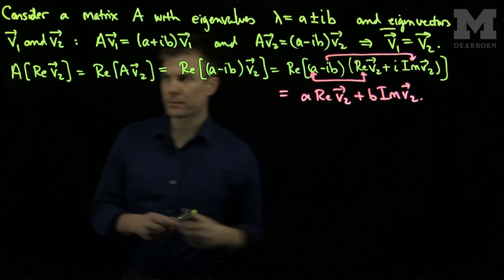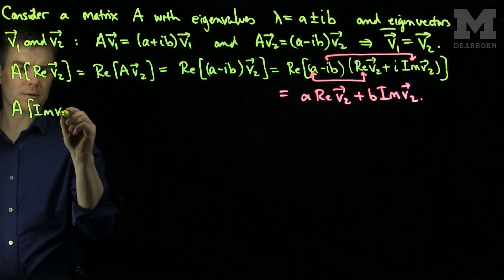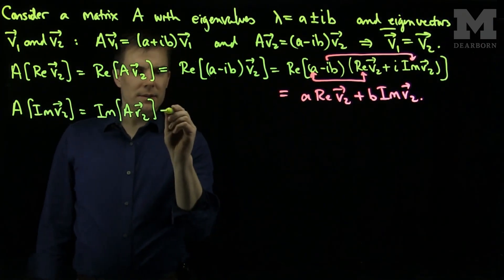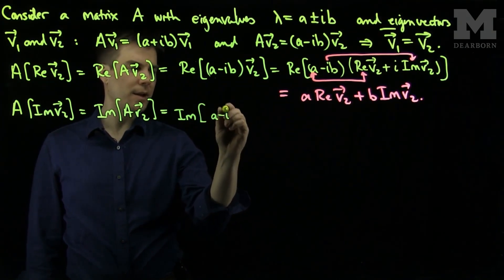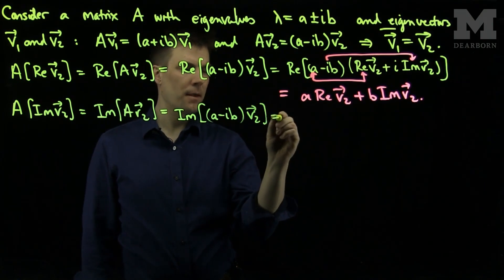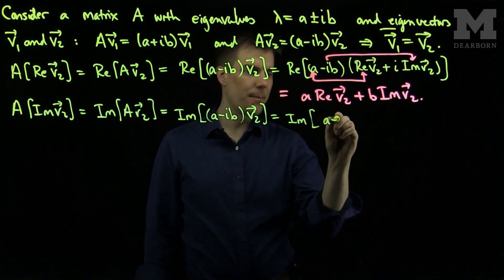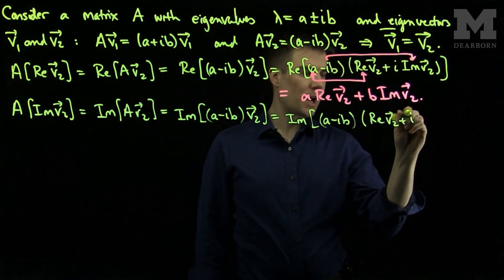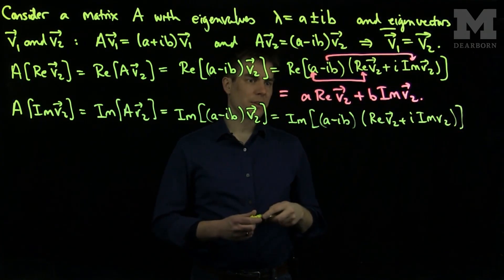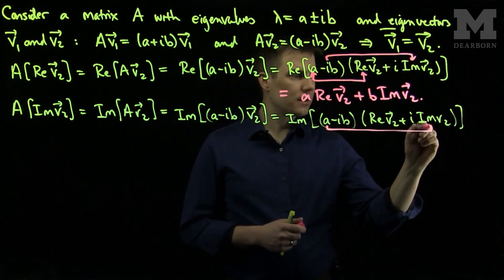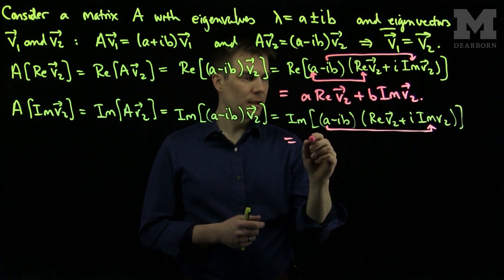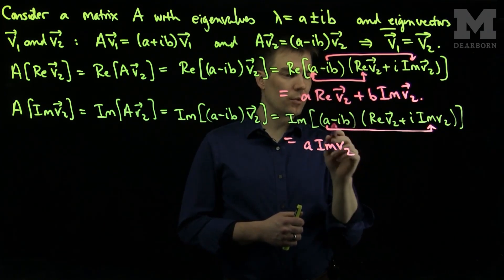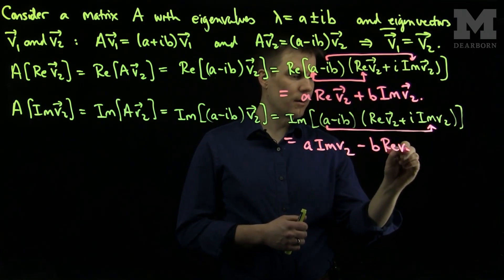Next, we compute A applied to the imaginary part of v2, which equals the imaginary part of A·v2. This is the imaginary part of (a-ib)·(Re(v2) + i·Im(v2)). Focusing on terms that have i's: A·Im(v2) contributes a·Im(v2), and (-ib)·Re(v2) contributes -b·Re(v2). So A·Im(v2) = -b·Re(v2) + a·Im(v2).